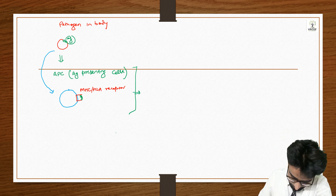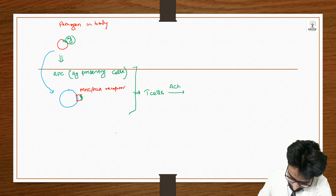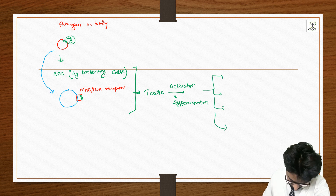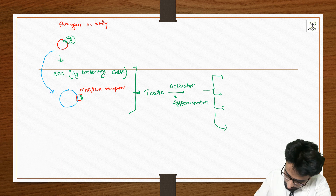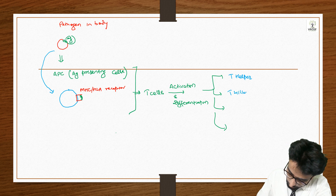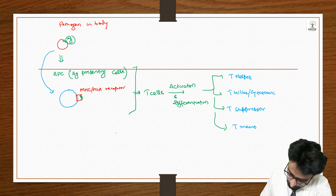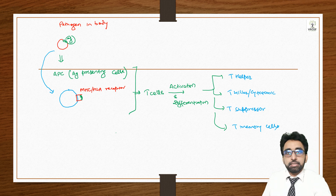This complex — the antigen presenting cell with the antigen exposed on its surface — will now interact with T-cells, leading to the activation and differentiation of T-cells. T-cells will form four types of cells: T-helper cells, T-killer cells (also known as T-cytotoxic cells), T-suppressor cells, and T-memory cells.